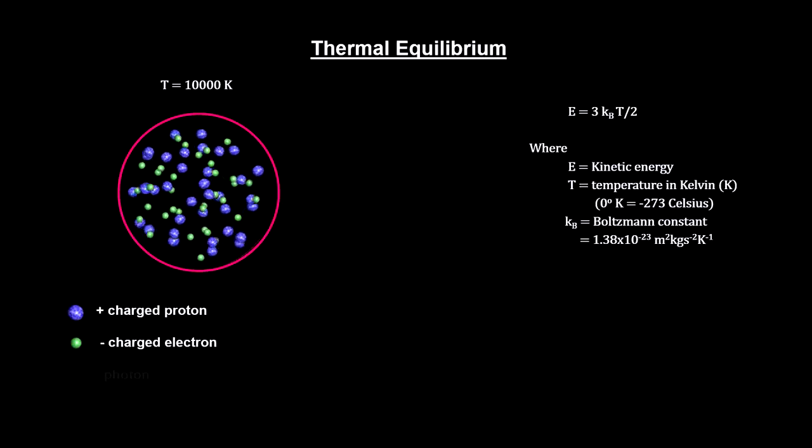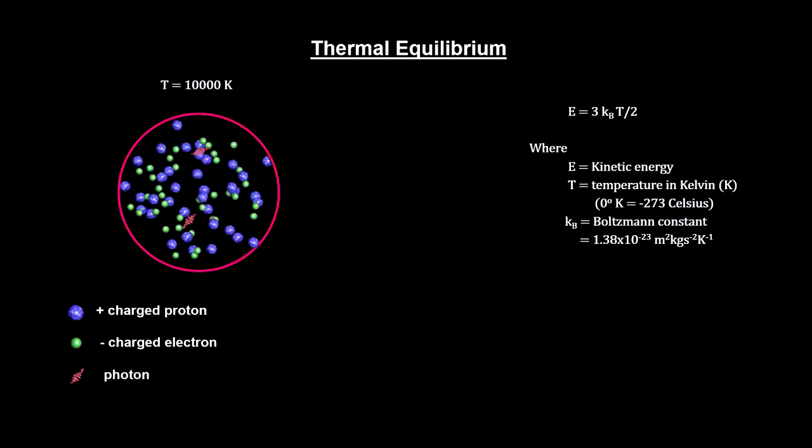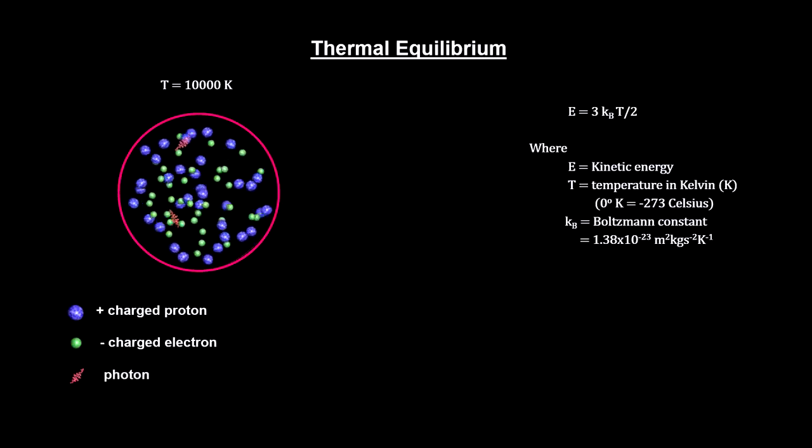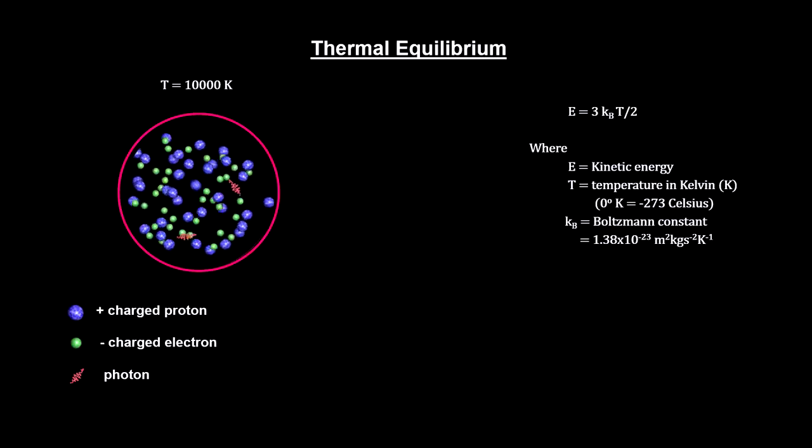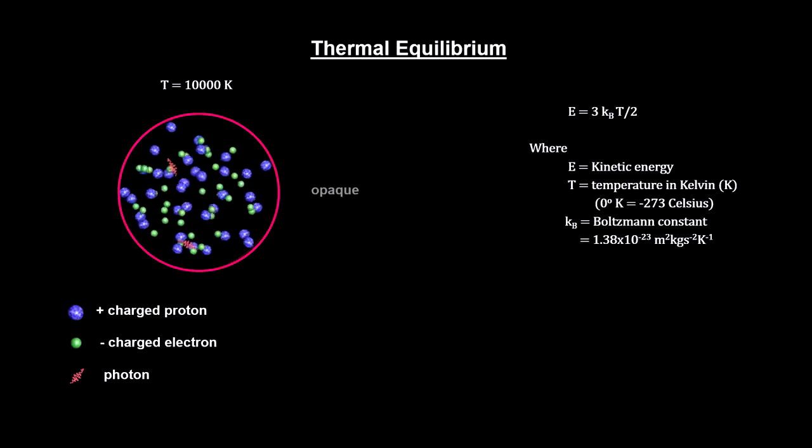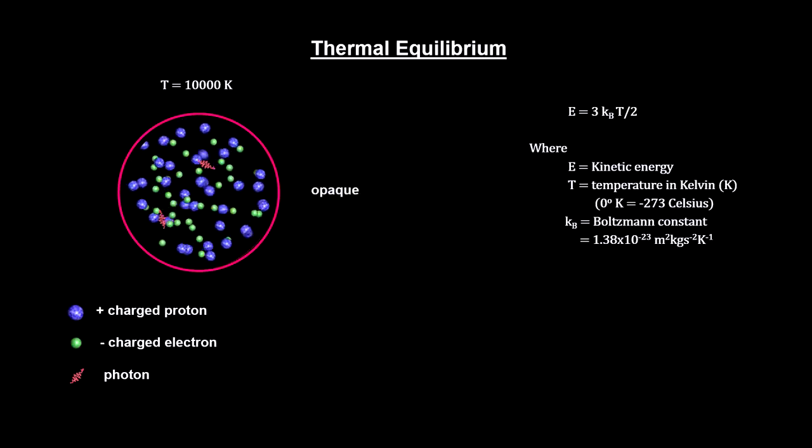If we add photons, they will scatter off the charged particles. Light cannot travel far through this space because it is constantly interacting with these free-moving charged particles. The plasma is opaque.